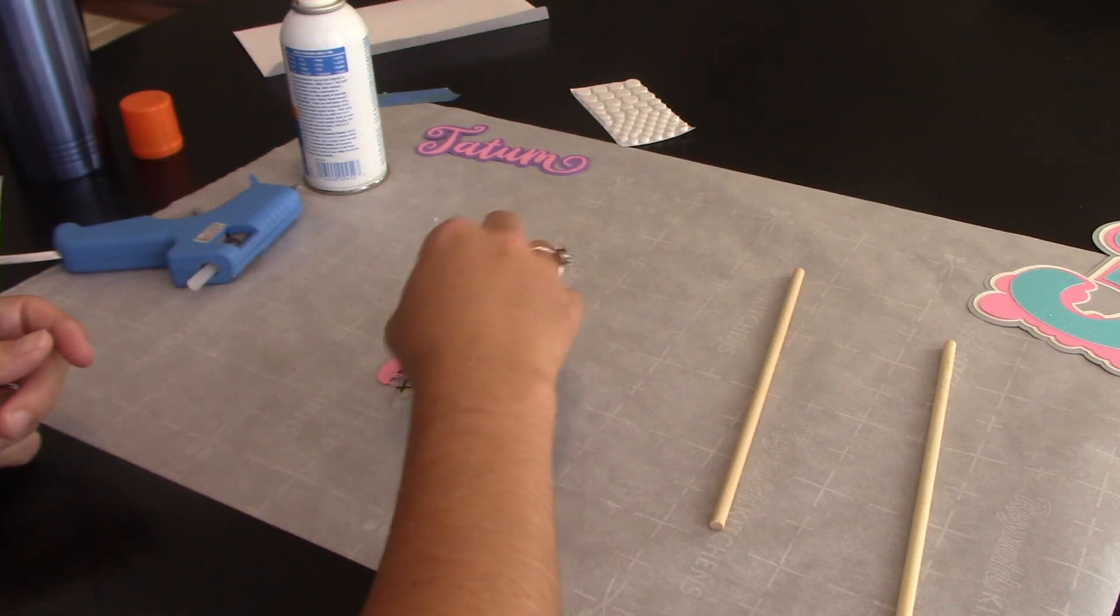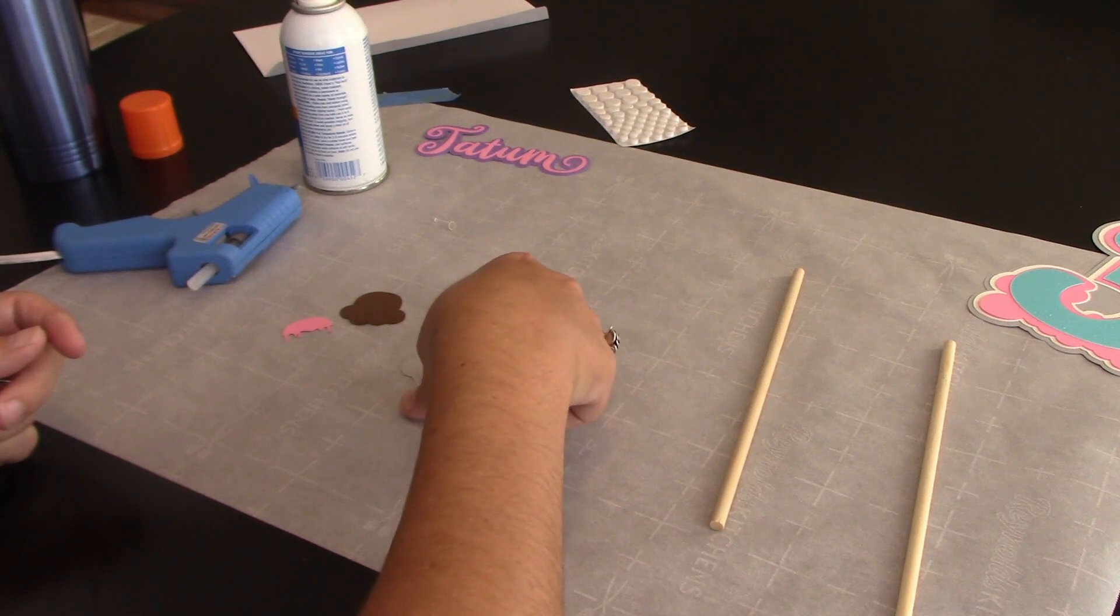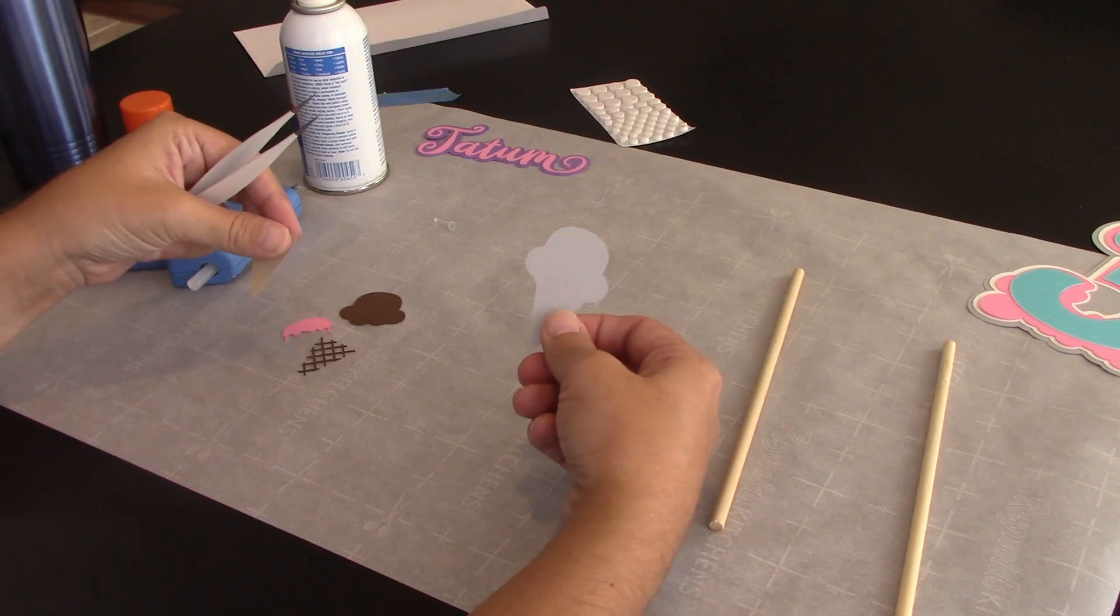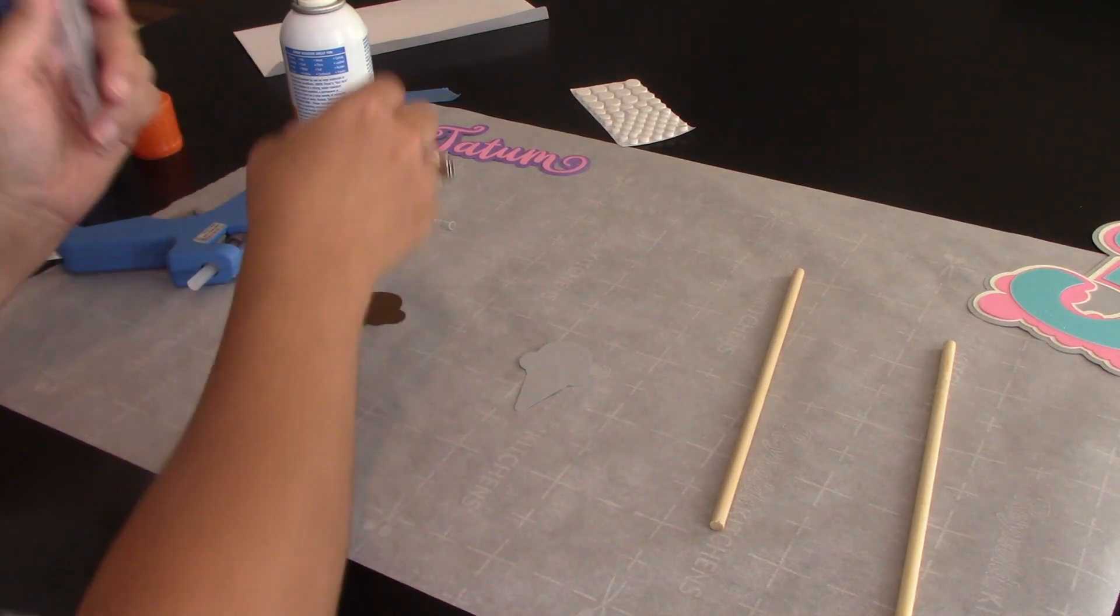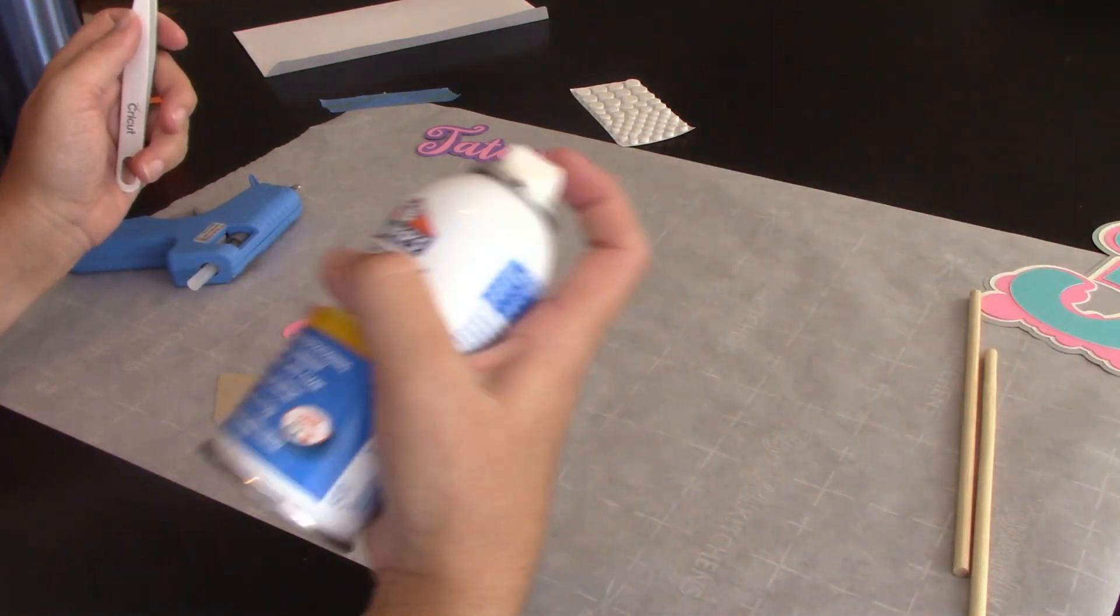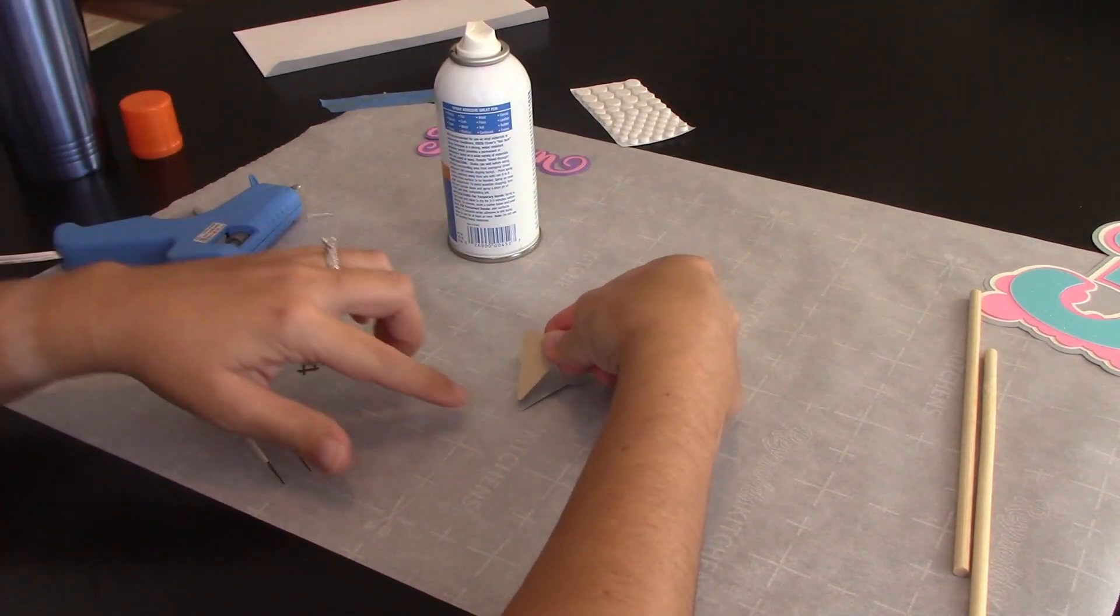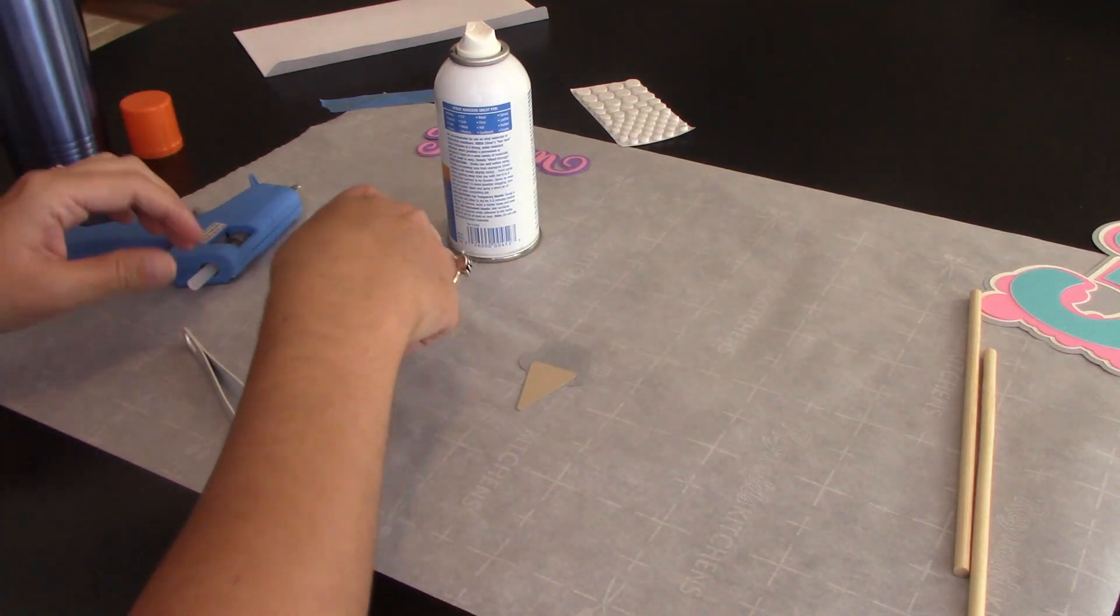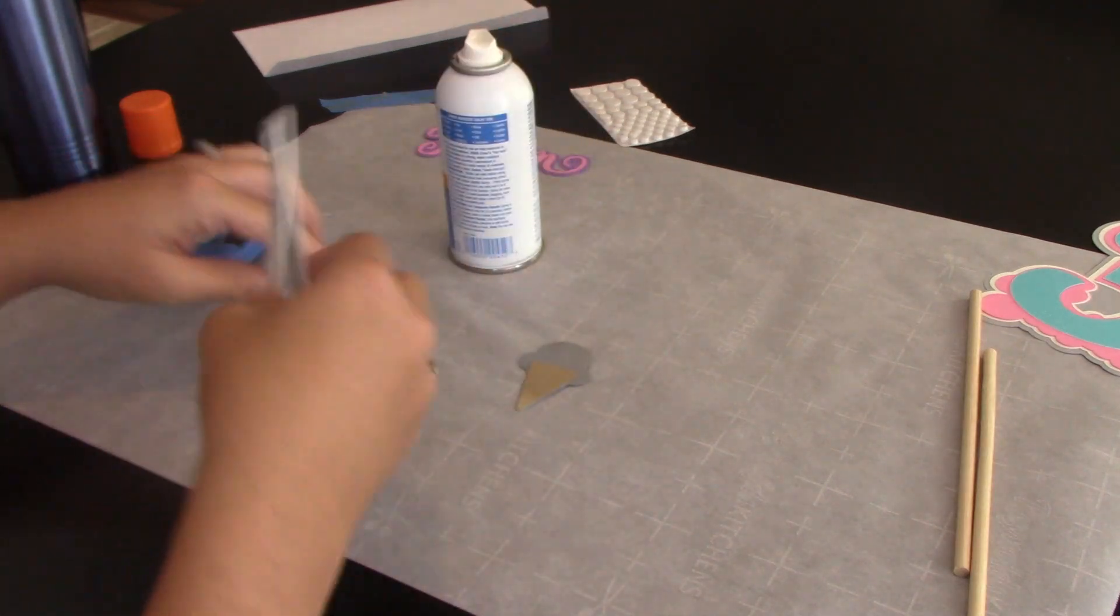Now I need to build this ice cream. It's hard for you to see the base layer because it's gray and it's going on top of this, but it's there. So I'm going to spray it, give some shakes. I'm going to move my sticks out of the way. Stick the bottom of my cone on.